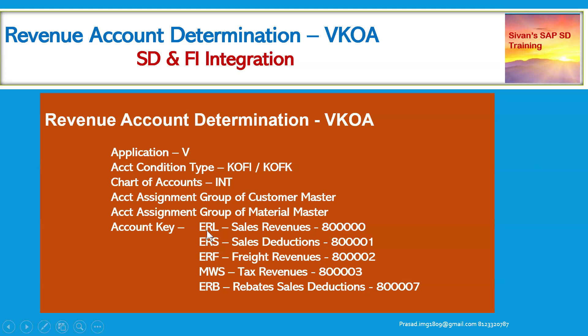ERL always stands for sales revenues, ERS for sales deductions, ERF for freight revenues, MWS for tax revenues, and ERB for rebates. This is for our information so that we can remember them and be able to explain when they ask about how the revenue account is determined for sales deductions, freight revenues, or tax revenues.